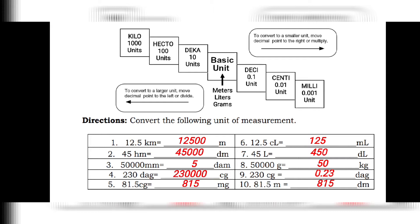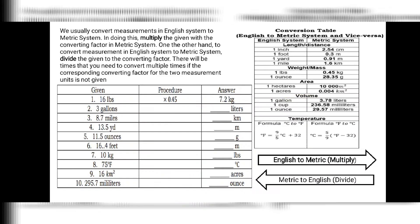Let us now discuss how to convert from the English system to the metric system and vice versa. This is a bit more difficult because we don't just move the decimal point — we multiply or divide by converting factors. Here is the rule: when converting from English to metric, we simply multiply the given measurement by the converting factor.